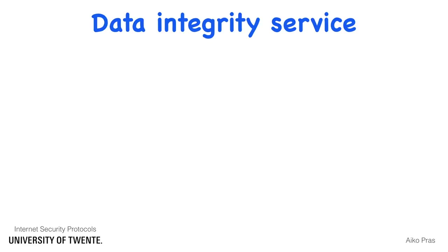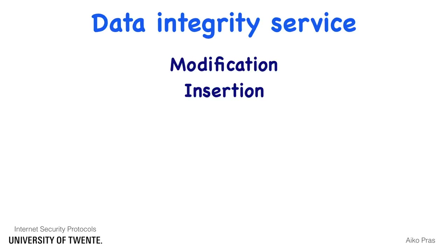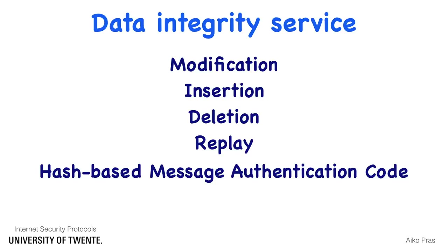Data Integrity is a security service that protects against message modification, insertion, deletion, or replay attacks. It relies on the inclusion of a hash-based message authentication code, abbreviated as HMAC, to each individual message. Such code is calculated by a hash algorithm by feeding it with the message contents as well as a secret key. Each message therefore includes a unique code. To detect insertion, deletion, or replay, a sequence number must also be added to each message.